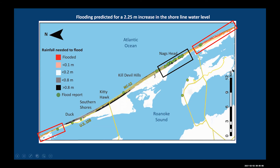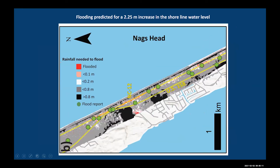Zooming in on the Nags Head region where we received most of our flood reports, you can see finer patterns in where flooding is likely to occur. Both the app reports and the simulation predict flooding occurring right along NC-12, which is a region where the community has already invested a lot of money in repairs after storms. We think that remains an area of vulnerability to these groundwater processes.